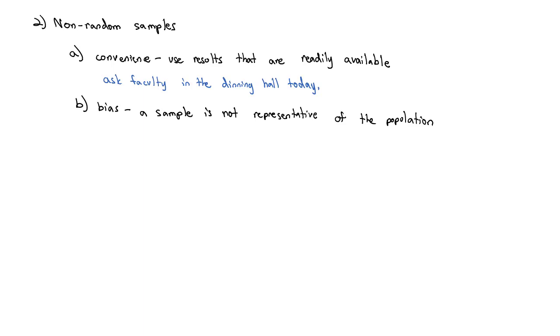For example, if we only ask the faculty in the dining hall, those are probably on-campus face-to-face instructors. We are not talking to any online instructors, and maybe they are going to view the policy differently. And so bias creates problems in statistical analysis because the sample statistics cannot be used to estimate the population parameters. We don't like non-random sampling.